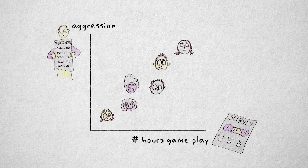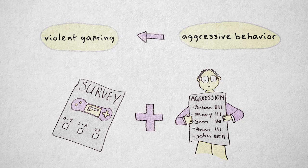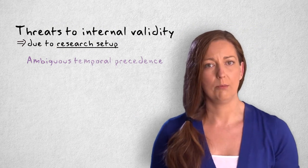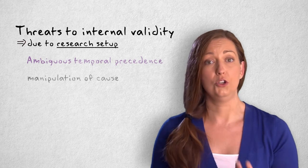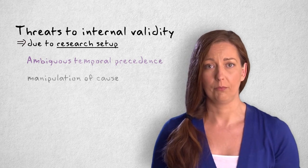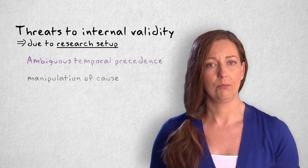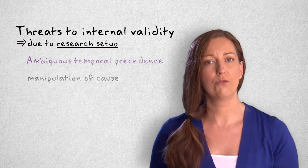Well, this doesn't mean violent gameplay causes aggressive behavior. Maybe children who play more violent games were more aggressive to begin with, and are more likely to seek out violent stimuli. The threat of ambiguous temporal precedence can be eliminated by manipulating or introducing the hypothesized cause. Of course, not all constructs can be manipulated, but if I can manipulate the cause, I can make sure it happens before the effect.